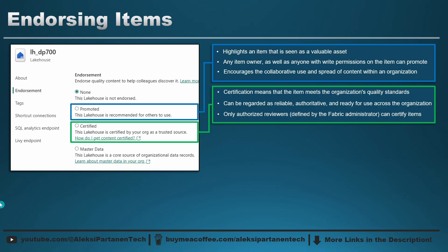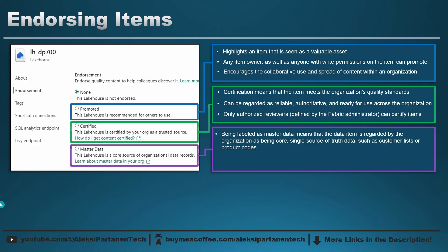Lastly, we have the master data endorsement. If an item is labeled as master data, it is regarded by the organization as being core, single source of truth data — such as a customer list or product codes. Like with the certification process, you have to define your own rules for using this master data endorsement. Fabric admins can control the master data process and determine who can approve items to receive this endorsement.